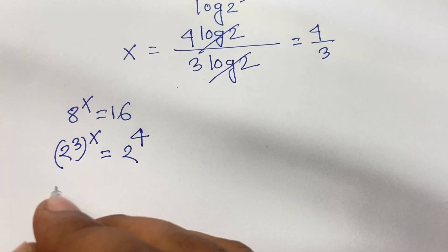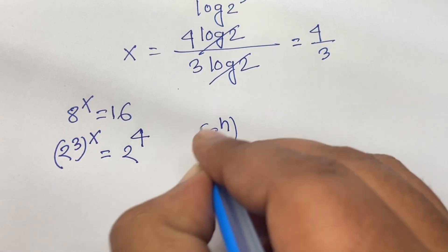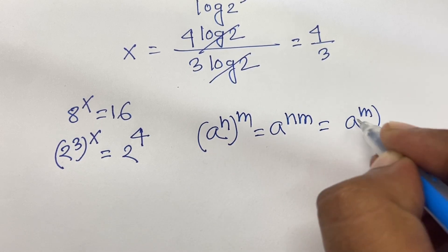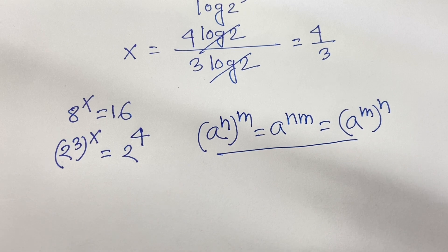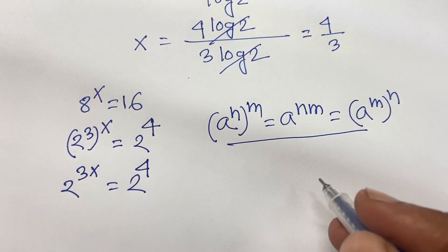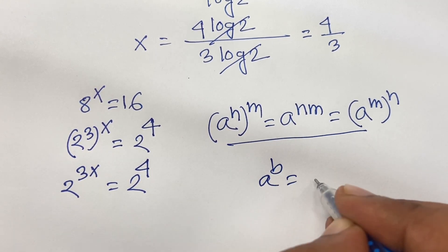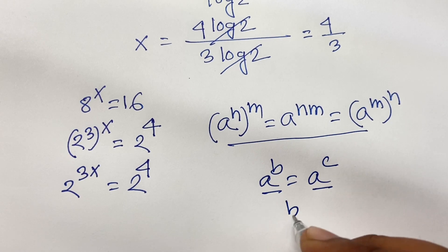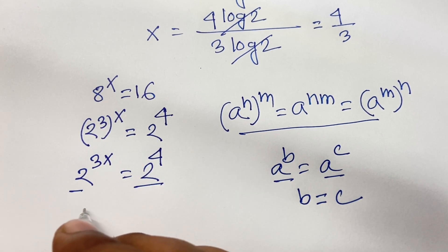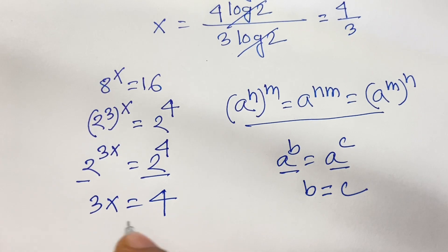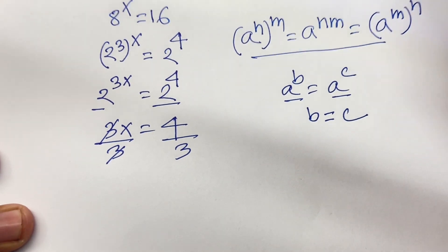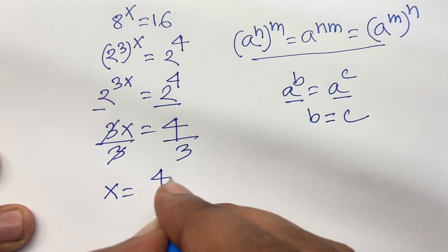According to exponential rules, we know that a to the power n, bracket m, equal to a to the power n times m. If I follow this rule, I can say here is 2 to the power 3x equal to 2 to the power 4. We know that if a to the power b equal to a to the power c and the bases are the same, then b equal to c. So here the bases are the same, and I can say the powers are equal: 3x equal to 4. If I divide both sides by 3, then 3 and 3 cancel, so x equal to 4 over 3.